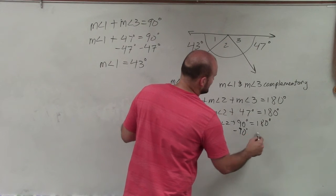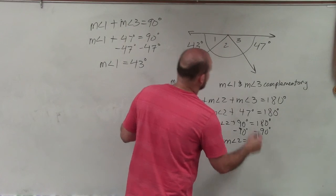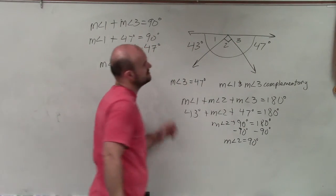Then subtract 90 degrees. So therefore, the measure of angle 2 is equal to 90 degrees. And we can give it one of those symbols.